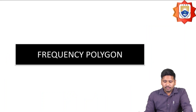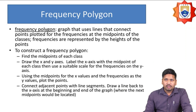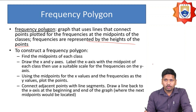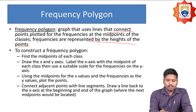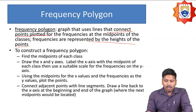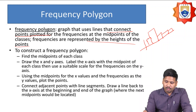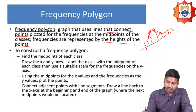The next graph type is the Frequency Polygon. A frequency polygon is a graph that uses lines to connect the points plotted for the frequencies at the midpoints of the classes, and the frequencies are represented by the height of the points. This frequency polygon is constructed after constructing the histogram by joining the midpoints of the classes of the histogram to obtain the line.